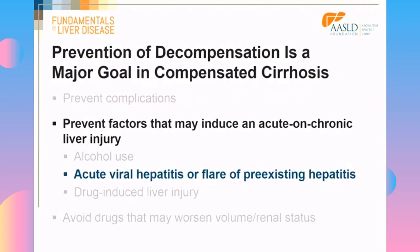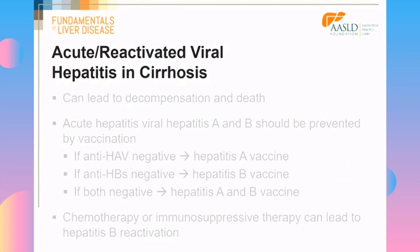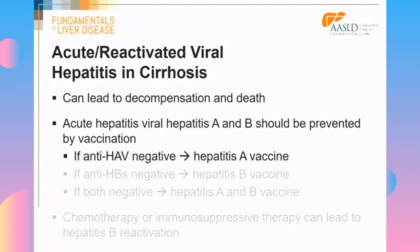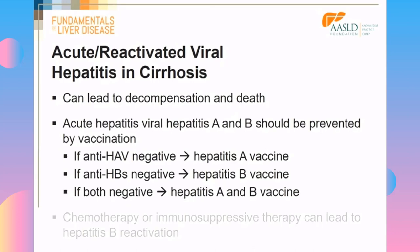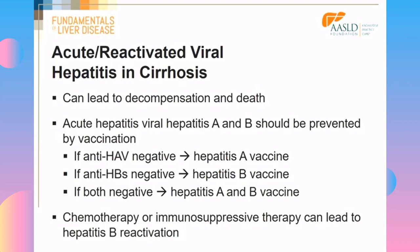Developing acute viral hepatitis or a flare of pre-existing hepatitis on top of cirrhosis can result in decompensation and even death. You must check for hepatitis A serology — anti-HAV — and vaccinate if negative. If anti-HBs is negative, they need the hepatitis B vaccine; if both are negative, they can receive a combined hepatitis A and B vaccine. In patients with hepatitis B, even those who are HBV DNA negative or have seroconverted, chemotherapy or immunosuppressive therapy can lead to hepatitis B reactivation.